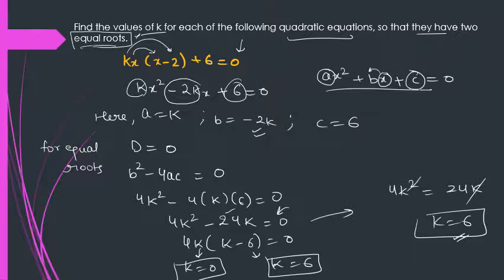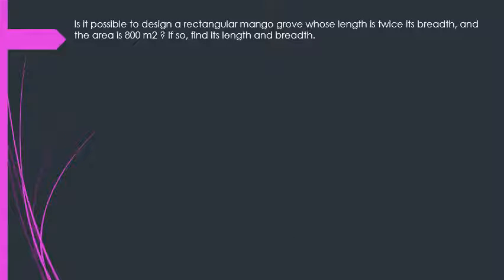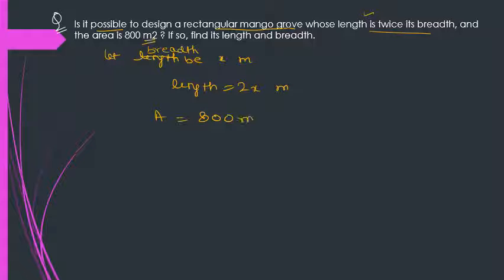Now let's take up another example. Here you need to check whether this particular situation is possible or not. Is it possible to design a rectangular mango grove whose length is twice its breadth? So let's say, let length be x. So x units, it is written meter square, so that means x meter. Now what is given? Length is twice its breadth. So we have to consider breadth here. So breadth is x. So length will be what? Twice its breadth, that means 2x meter. Now area is what? 800 meter square.